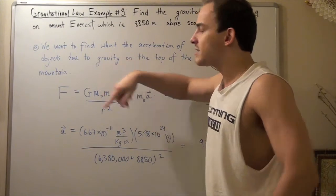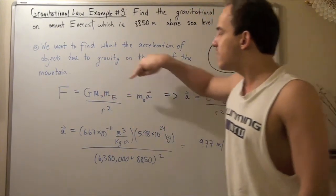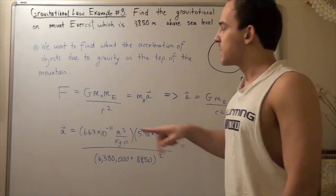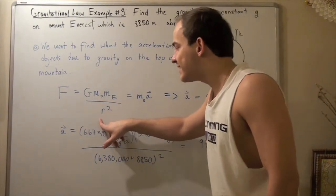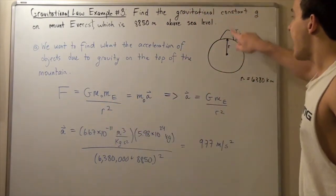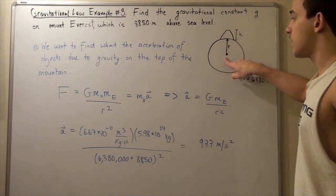This is the mass of some object placed on top of the mountain, and this is the mass of the entire Earth, divided by the distance between the object and the center of the Earth squared.